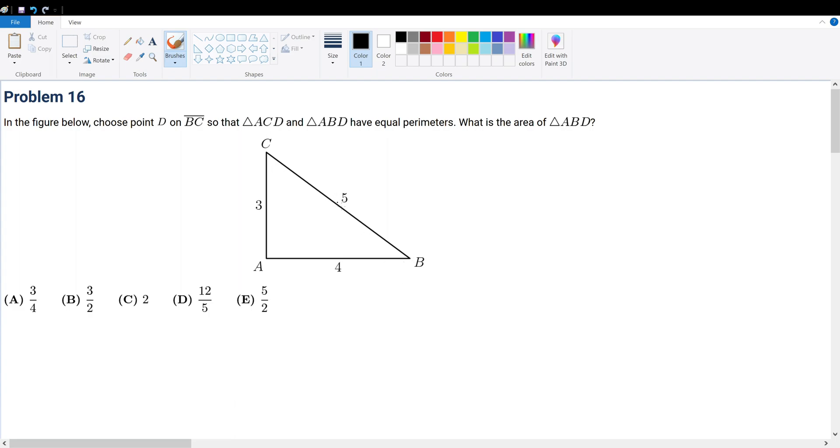So let's assume that this point D is right here. I have no idea, this is an arbitrary point. So ACD, this triangle right here, have equal perimeters with ABD. So this one right here. What is the area of ABD?